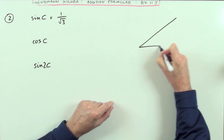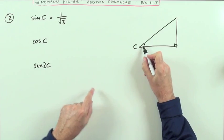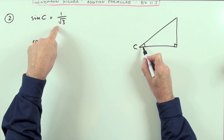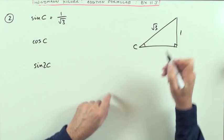What would this triangle have looked like that contained the angle C? Well, if the sine of this angle was 1 upon root 3, that means the side opposite to C would have been 1 and the hypotenuse would have been root 3.